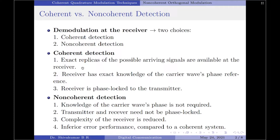This means that the receiver has exact knowledge of the carrier wave's phase reference, in which case we can also say the receiver is in phase lock with the transmitter. On the other hand, when we come to non-coherent detection, knowledge of the carrier wave's phase is not required.